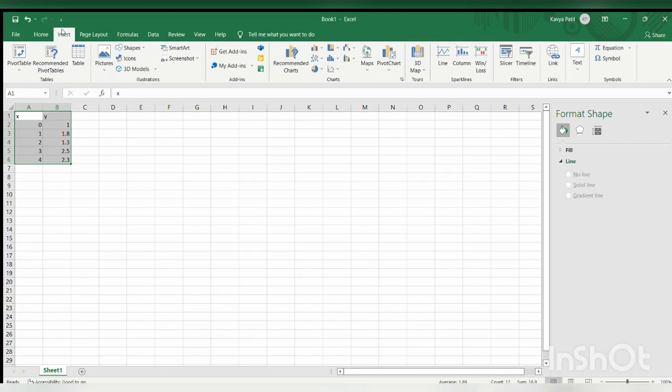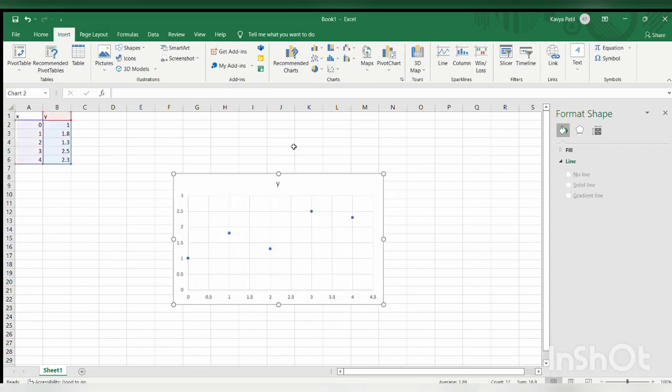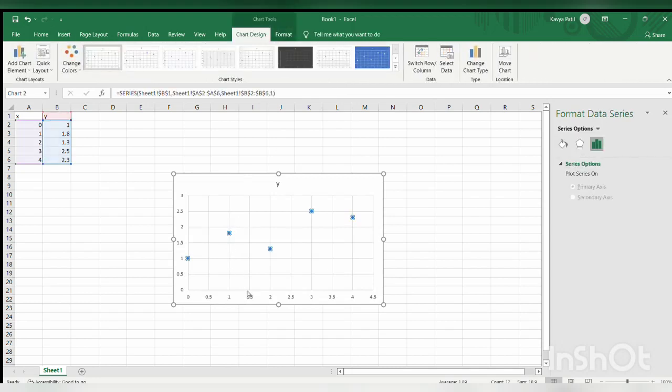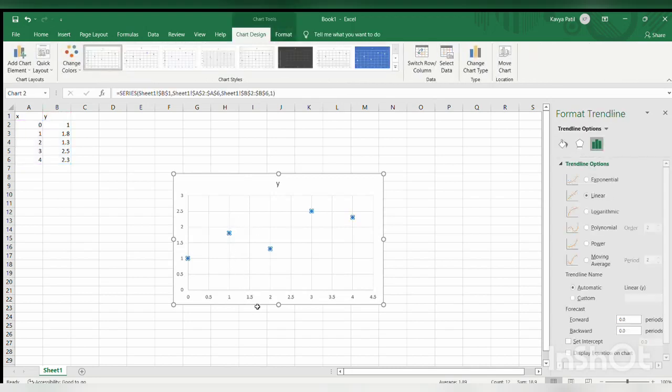Select the values, click on insert, go to the charts and scatter the points. Now click on the point, right click on it, then select add a trendline. By default the linear line will be visible here, then select the polynomial of order 2. The curve will be displayed.